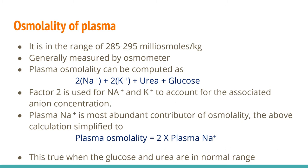Plasma sodium is the most abundant contributor to osmolality. The above calculation is simplified to: plasma osmolality = 2 × plasma sodium concentration. This formula is only valid when glucose and urea are in the normal range; it is not valid in severe hyperproteinemia and lipemia.